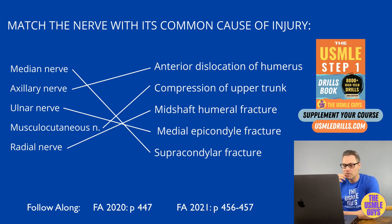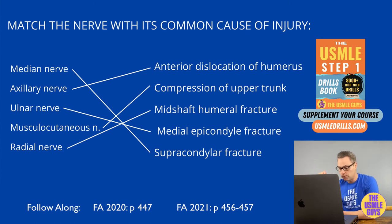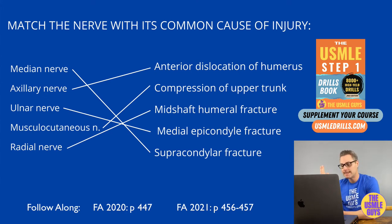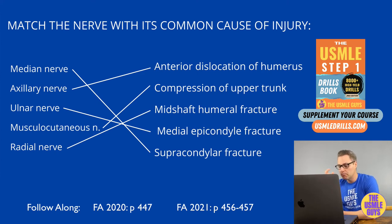With a radial nerve injury, sensory loss includes numbness over the posterior forearm and radial distribution of the dorsum of the hand. Motor deficits include the classic wrist drop deformity, weakened elbow extension, weak thumb extension, and weak finger extension at the MCP joints. You'll also notice a loss of both triceps and supinator reflexes.